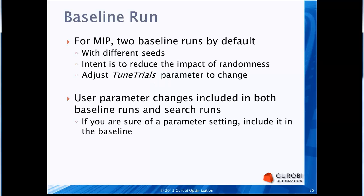The first thing that happens is the baseline run. For MIP, we actually do two baseline runs by default, using different random number seeds. The intent is to reduce the impact of randomness — if a set of parameters gets lucky for this model, it's less likely to get lucky twice for both random number seeds. There's a parameter called tune trials that lets you adjust the number of baseline runs. The number you need depends on how sensitive your model is to small perturbations like changing the random number seed.